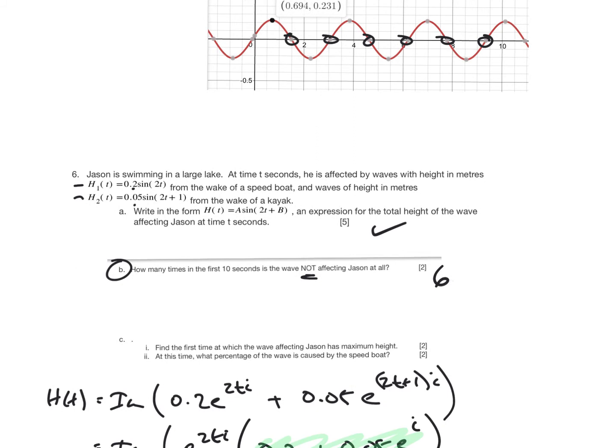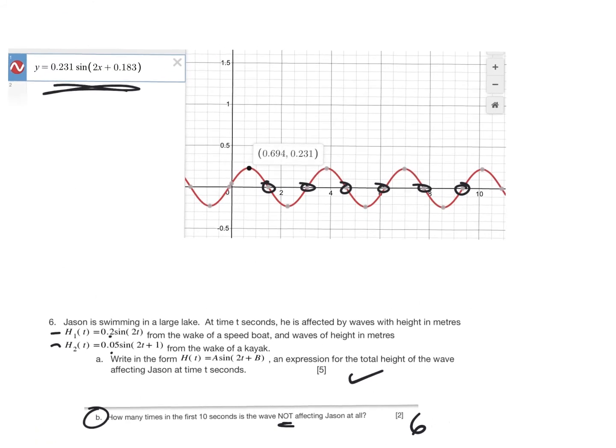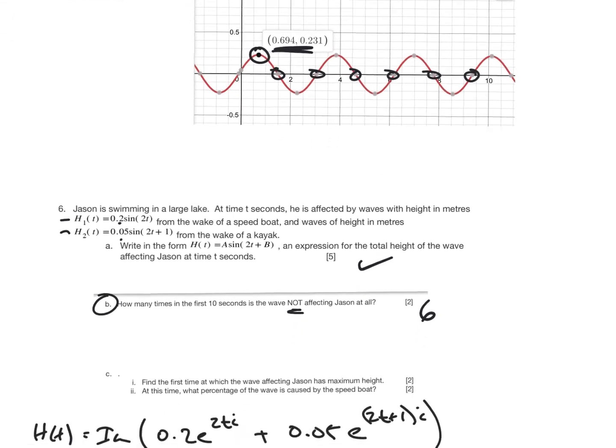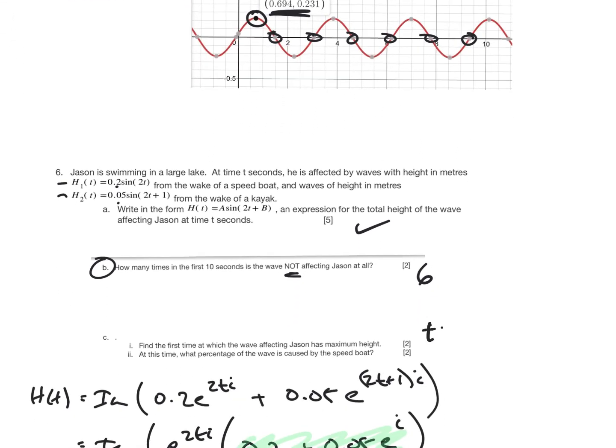Find the first time at which the wave affecting Jason was a maximum height. Well, that's going to be this value here, which I've highlighted here. That happens at 0.694. So T is equal to 0.694 seconds, I believe it's in. Time is in seconds.